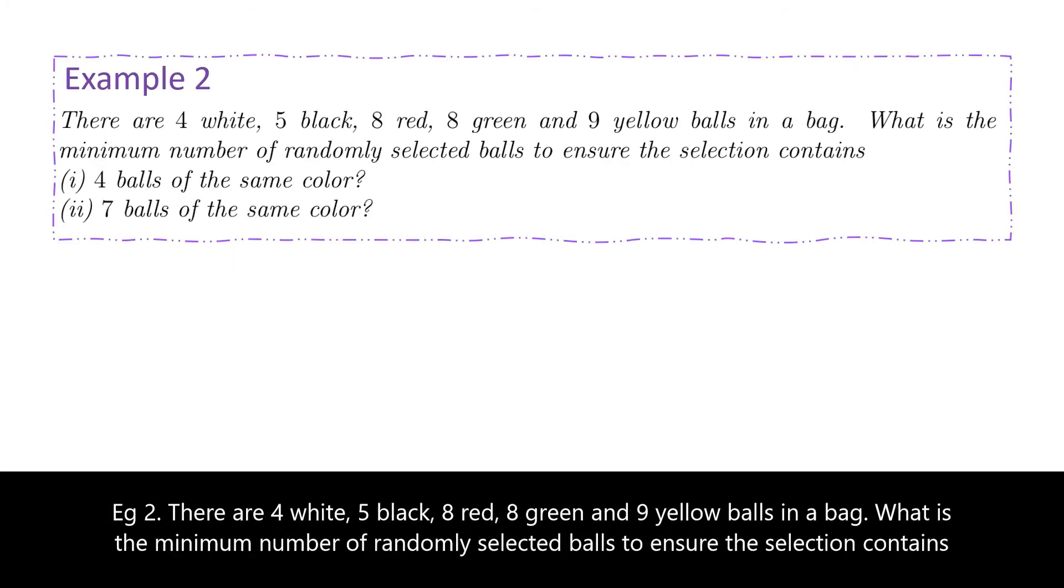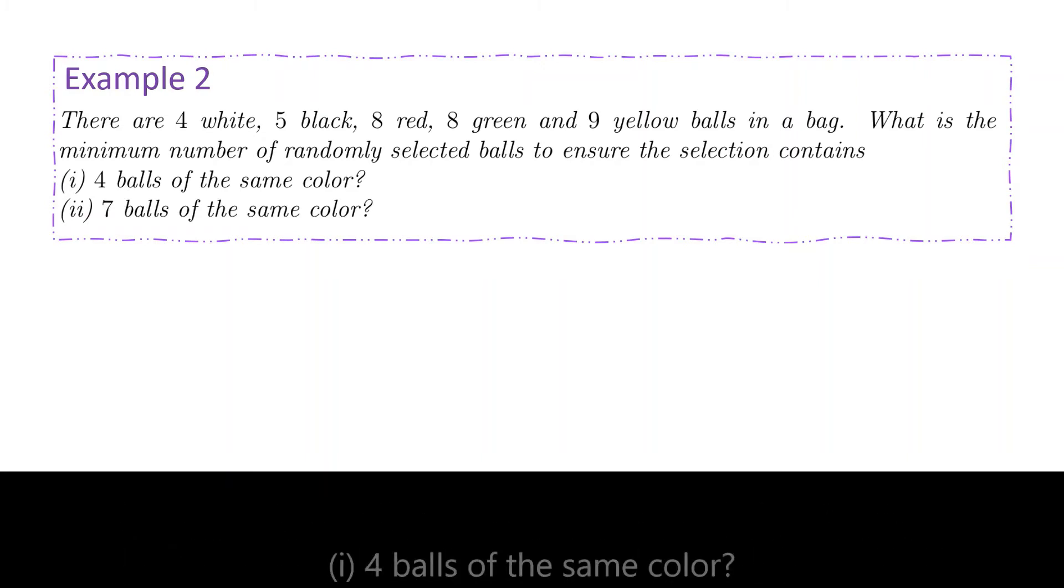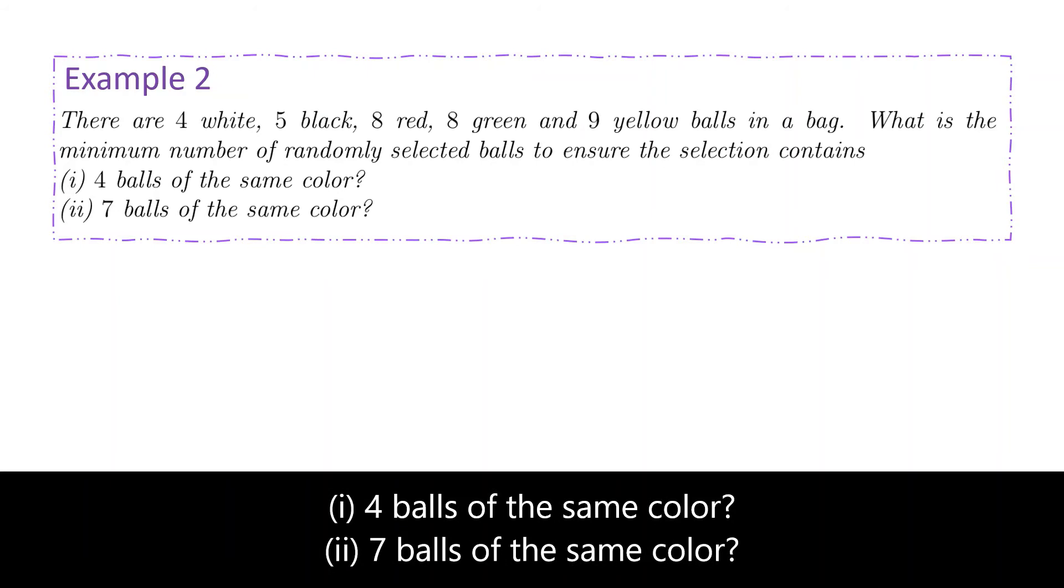Example 2. There are 4 white, 5 black, 8 red, 8 green, and 9 yellow balls in a bag. What is the minimum number of randomly selected balls to ensure the selection contains Part 1: 4 balls of the same colour.